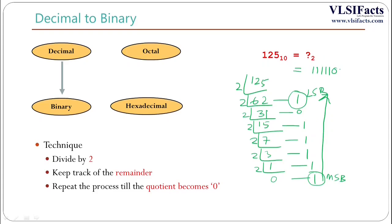So the decimal number 125 has an equivalent binary representation of 1111101.